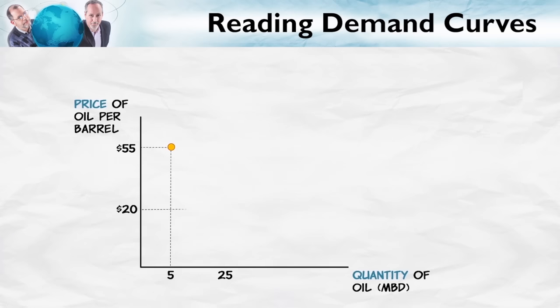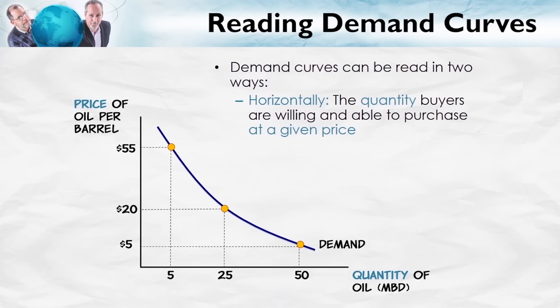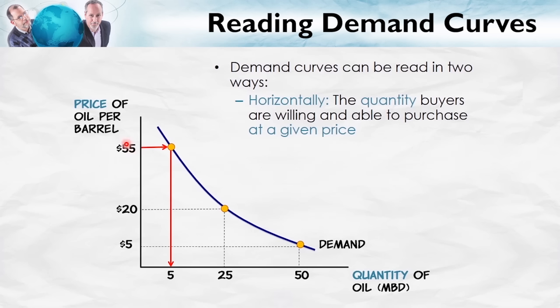We're going to be dealing with demand curves throughout the course, so it's very important that you be comfortable reading them. They can be read in two different ways. The first method, the horizontal method, is the one I've already shown you. It says, for example, at a price of $55 per barrel, we read horizontally over to the demand curve and down to find that consumers are willing and able to purchase 5 million barrels of oil per day. At a price of $5 per barrel, consumers are willing and able to purchase 50 million barrels of oil per day.